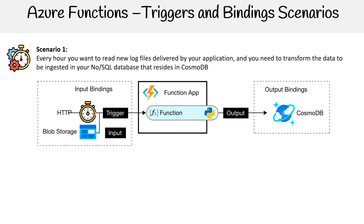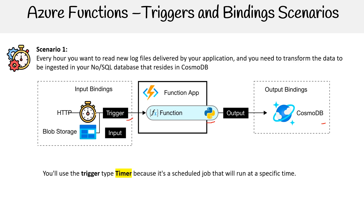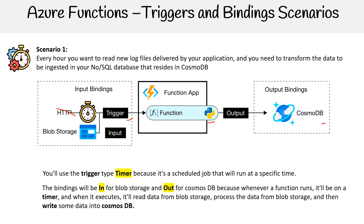Here is our visualization: we have our function, which is Python, and it's going to output to Cosmos DB, so we need a binding out to there. It has a trigger that gets triggered by a timer. We also have blob storage. You use a trigger type timer because it's a scheduled job that will run at a specified time. The trigger will be in for blob storage and out for Cosmos DB.